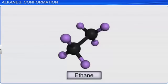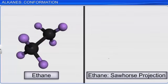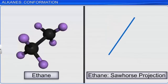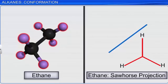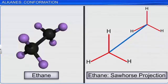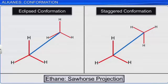In sawhorse projection, the molecules are viewed along their molecular axis at an oblique angle. The carbon-to-carbon bond is shown as a long straight line whose upper end is bent slightly either towards the left or towards the right. The front carbon is shown at the lower end of the line, and the back carbon at the upper end. Each carbon has three hydrogen atoms attached to it, shown with the help of three lines inclined at an angle of 120 degrees to each other. Using sawhorse projection, the three-dimensional structure of the eclipsed and staggered conformations can be easily visualized.